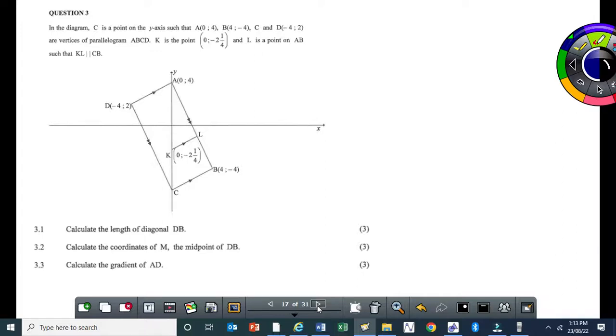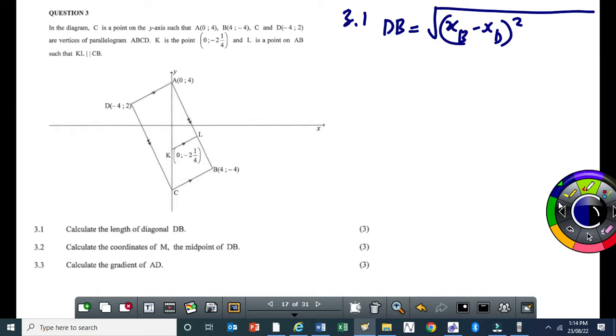Diagonal of DB. So here you cover DB. That's very easy. For 3.1, DB is equal to the square root of xB minus xD. Please hear away, as I said, that sometimes it's not necessary to use x2 minus x1.